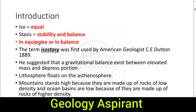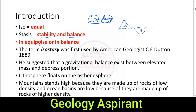Now coming to the introduction — the term 'isostasy' comes from 'iso' meaning equal, and 'stasy' from 'stasis' meaning stability or balance. So isostasy refers to how the Earth's surface — with mountains, basins, depressions, and oceans — is in a state of balance. The Himalayas stand at over a thousand meters, and we also have the Mariana Trench.